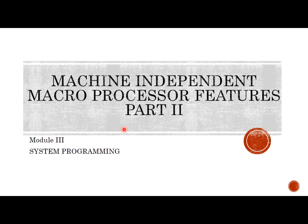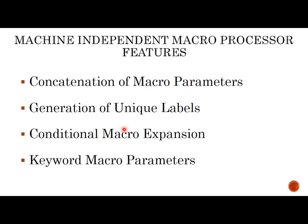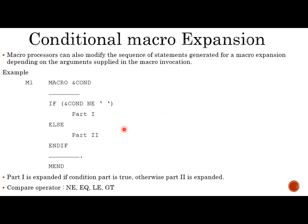Hi students, welcome to the second video on machine independent macro processor features. We already studied concatenation of macro parameters and generation of unique labels. In this video I would like to discuss conditional macro expansion and keyword macro parameters. First, conditional macro expansion: macro processors can also modify the sequence of statements generated for a macro expansion depending on the arguments supplied in the macro invocation.